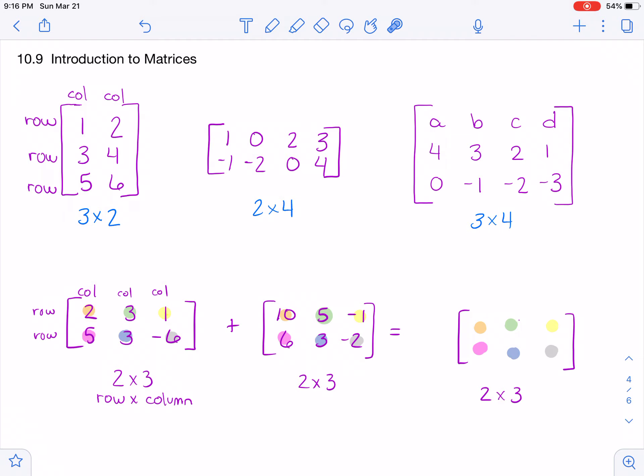And our answer is going to be also a two by three. And what you do is add or subtract, depending on the sign, things that are in the exact same positions. So this is in the first row, the first column, and I'm going to add it to what's in the first row, first column of my second matrix. So that means I'm going to add the two and the ten and get twelve.